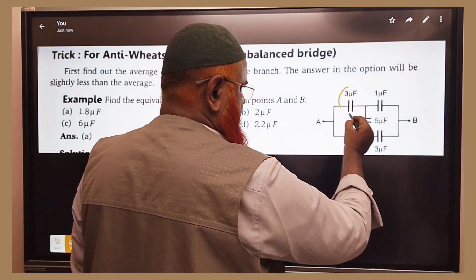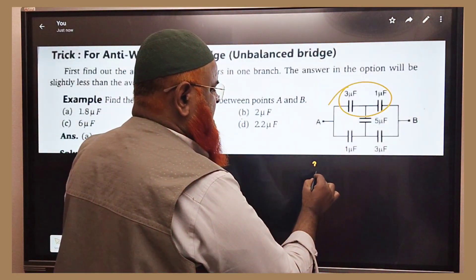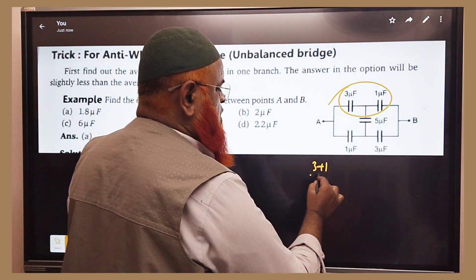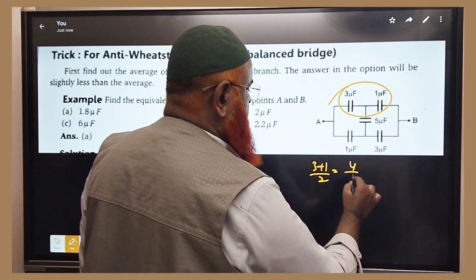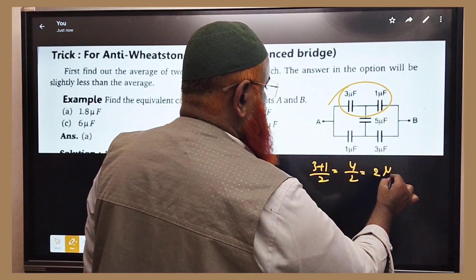You can just take 3 and 1 here. You can find an average of that. That is 3 plus 1 by 2, which is 4 by 2. You are getting 2 microfarads.